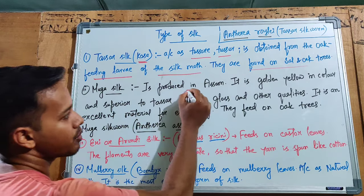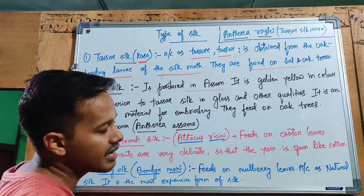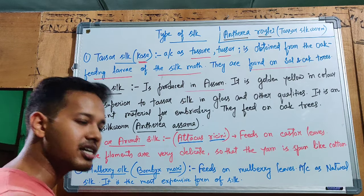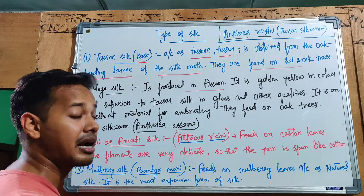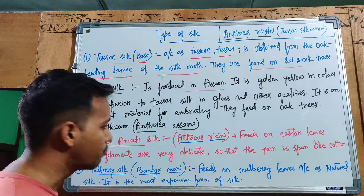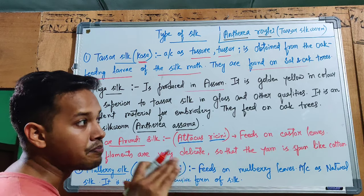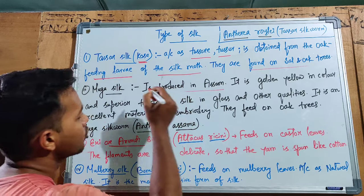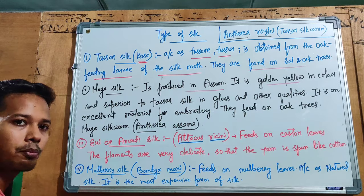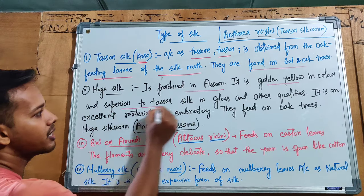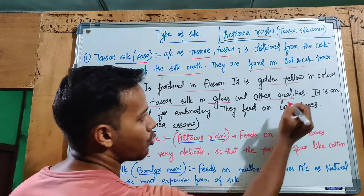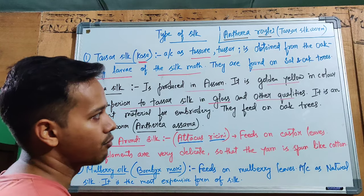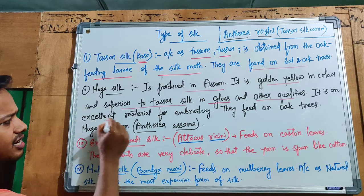Muga silk is produced exclusively in Assam under natural conditions. It is golden yellow in color and superior to Tassar silk in terms of gloss, shine, and tensile strength. It is an excellent material for embroidery.